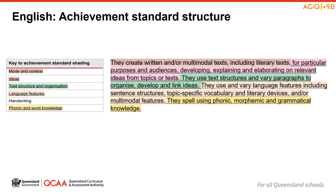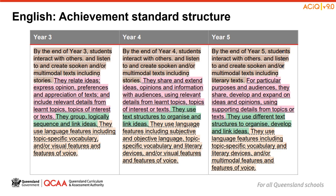On screen is the paragraph describing the Achievement Standard for writing and creating in Year 6, with the structure highlighted and labelled. Take a moment to review this structure. In addition, this consistent paragraph structure has been used across year levels. On screen is an example of the Achievement Standard for listening, speaking and creating, as seen for Years 3, 4 and 5. Understanding this structure can be used to support planning for teaching, learning and assessment across year levels. On the QCAA website, there are additional resources sequencing the Achievement Standard from Prep to Year 6, and there is also a similar resource for Years 7 to 10.